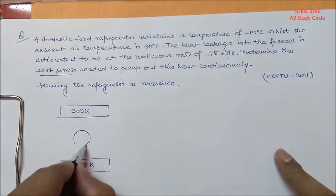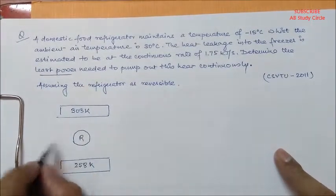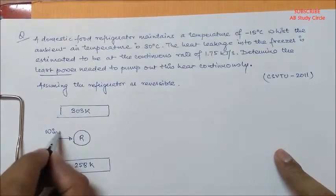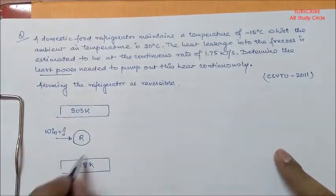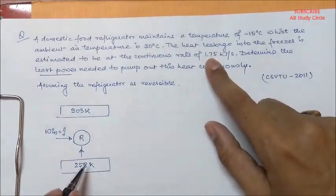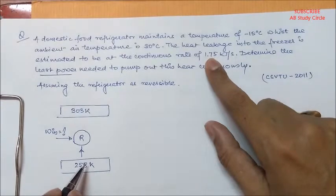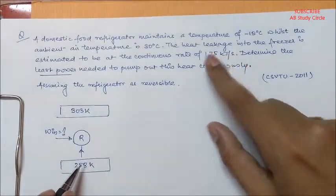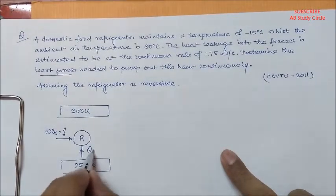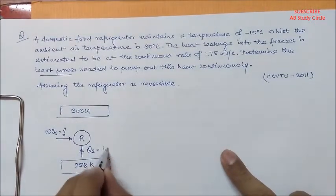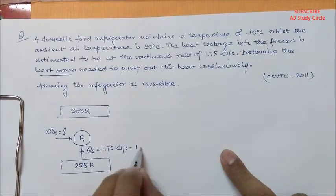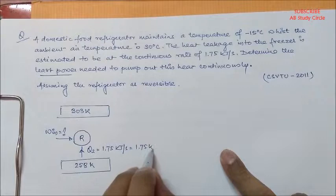So, this is your refrigerator which is taking some work input. We don't know that. And the heat which has been leaking into it is 1.75 kJ per second which is to be pumped out. So, your Q2 is nothing but 1.75 kJ per second or it can be written as 1.75 kW.